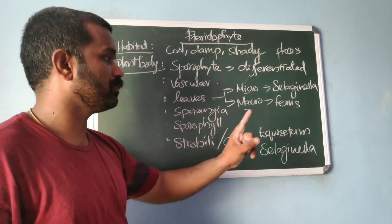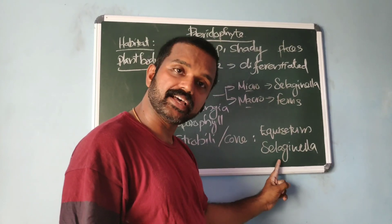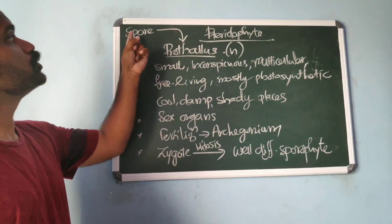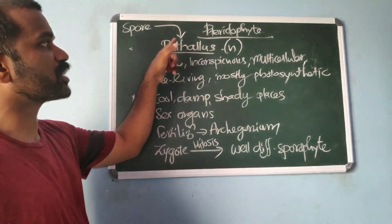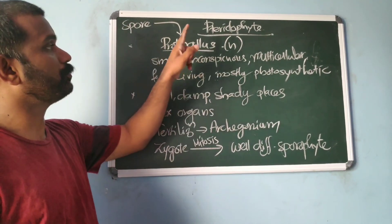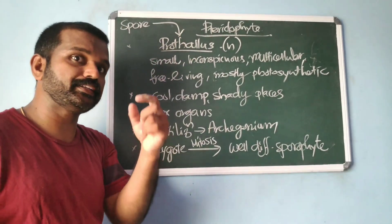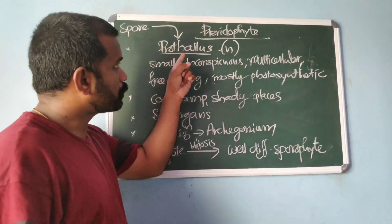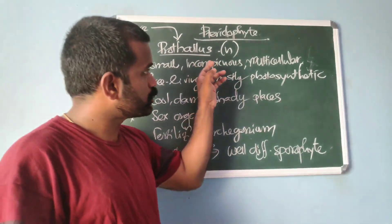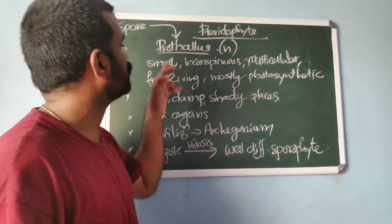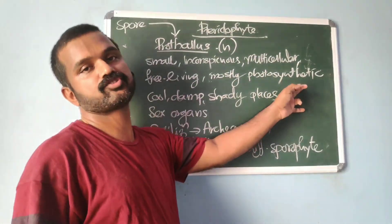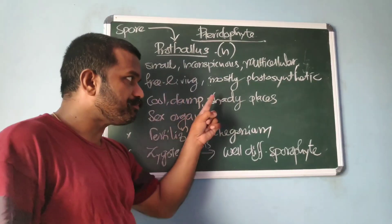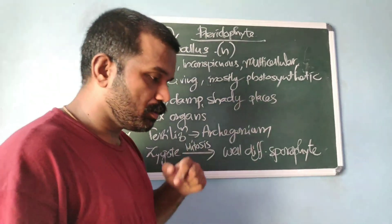Pteridophytes that possess strobili or cones include Equisetum and Selaginella. Spores on germination give rise to a prothalus — a haploid structure that is the gametophyte of pteridophytes. The prothalus is a very small, inconspicuous, multicellular, free-living and mostly photosynthetic structure.